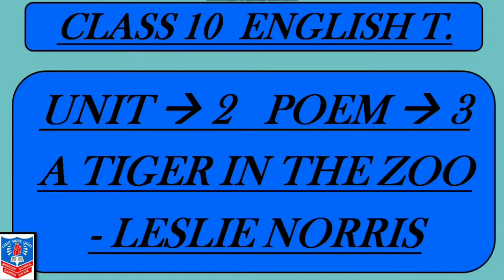Hello and good morning to all my dear students. A warm welcome to the class of English Text Standard 10. Today I am going to explain poem 3 from your second unit. The name of the poem is 'A Tiger in the Zoo' written by Leslie Norris.